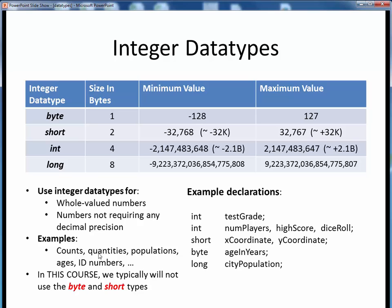For example, things such as counts, quantities, populations, ages, IDs, and so forth would be represented using an int or a long data type.